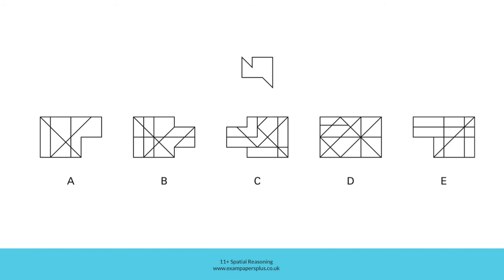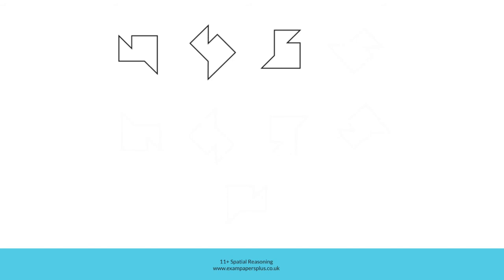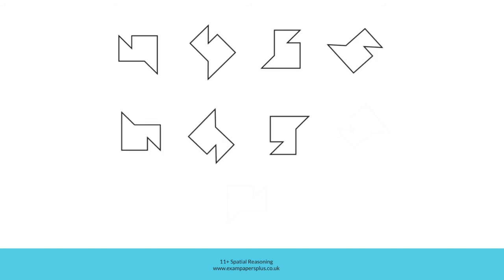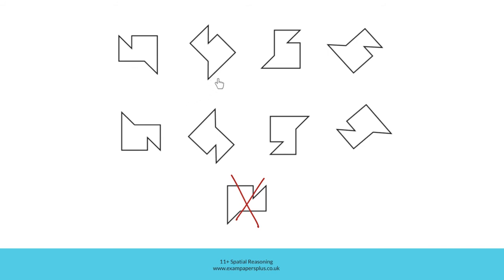To help us answer this question, let's remind ourselves of all the potential rotated versions of this shape. The shape could be hiding in its original position, or it might have rotated to be found in any one of these rotated positions. What you would not find, however, is a reflected or flipped version of the shape. The shape you're looking for will remain the same even if it rotates — it will not be found as a reflected or flipped version.